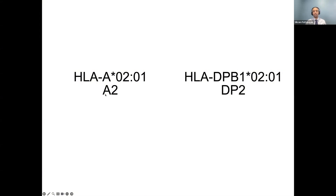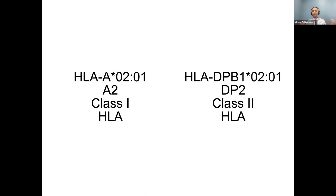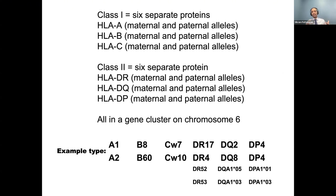You might think of HLA as belonging to class one or class two. HLA has a crucial role in the adaptive immune system, and HLA proteins are essentially duplicated in a gene cluster on chromosome six. That's how we get class one and class two. An individual's HLA type actually involves multiple proteins — six separate proteins for class one, and six or more for class two.